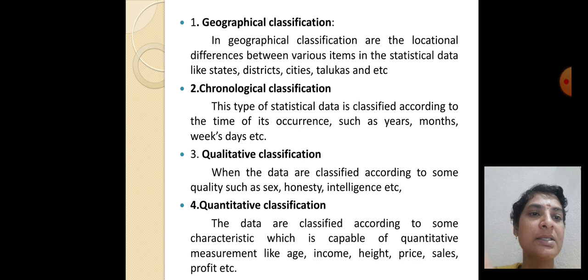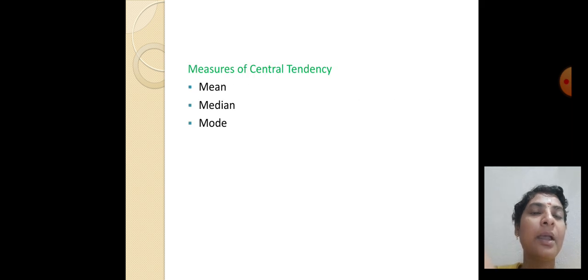Qualitative classification - when the data are classified according to some quality such as gender, honesty, intelligence, etc. Quantitative classification - the data are classified according to some characteristic which is capable of quantitative measurement like age, income, height, price, sales, profit, etc.